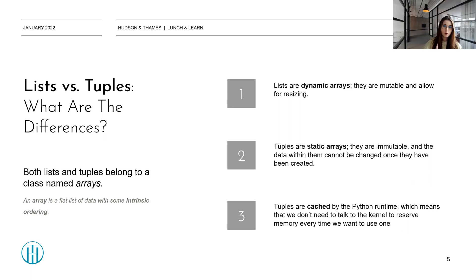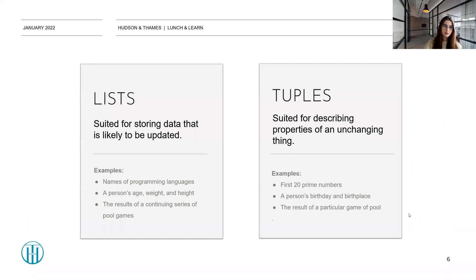One other thing associated with tuples is that tuples are cached by Python runtime, which means that we don't need to talk to the kernel to reserve memory every time we want to use one. So lists are dynamic and tuples are static. Let's go over it once more and understand in which cases we're better using a list and in which cases it's better to use a tuple.